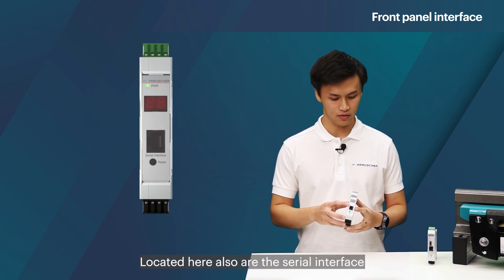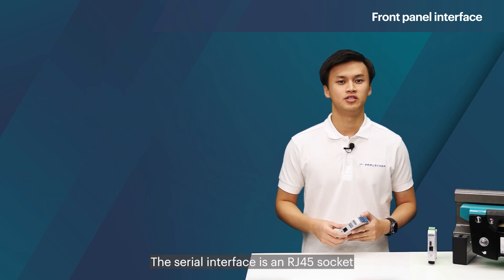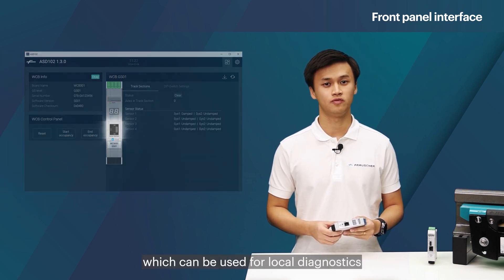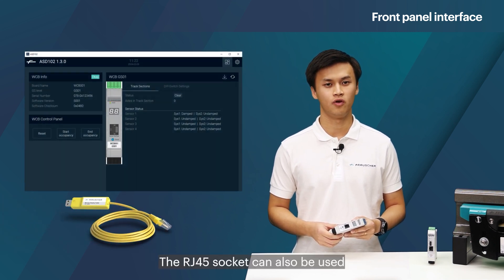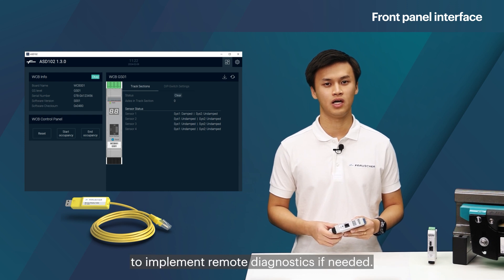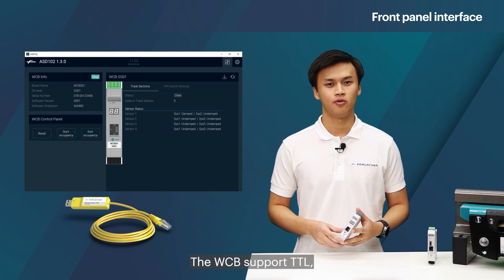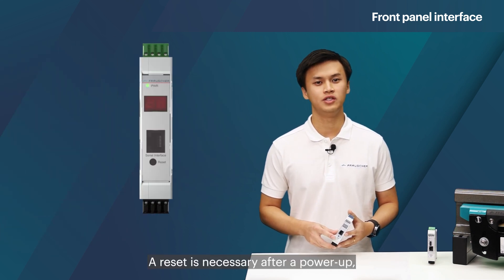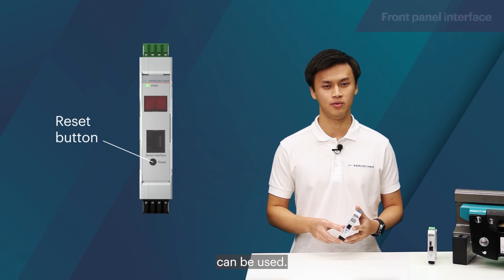Located here also are the serial interface and the front panel reset button. The serial interface is an RJ45 socket which can be used for local diagnostics via the ASD cable, and can also be used to implement remote diagnostics if needed. The WCB supports TTL, which is used for the ASD, as well as RS232 signals. A reset is necessary after a power-up, which this button on the front panel can be used for.